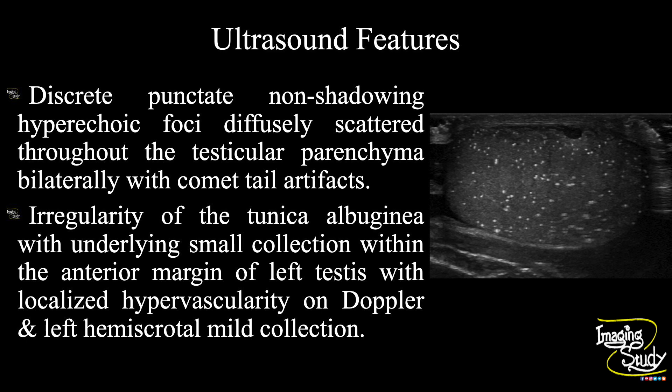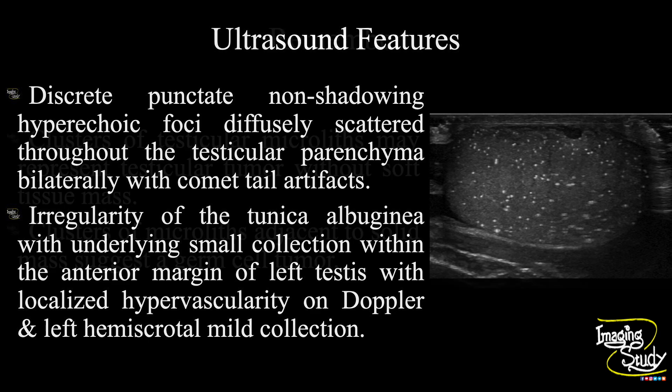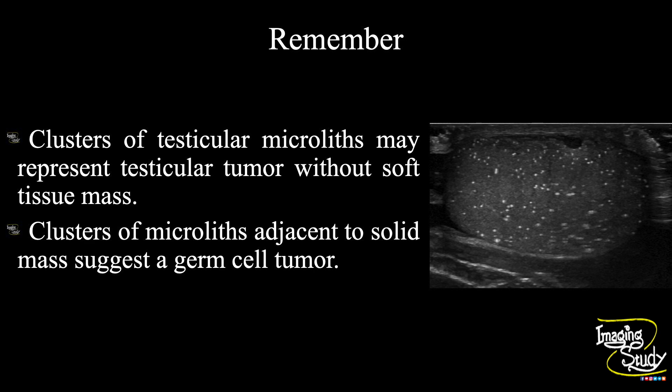So, in summary: discrete punctate non-shadowing hyperechoic foci diffusely scattered throughout the bilateral testicular parenchyma with comet-tail artifacts, indicating bilateral testicular microlithiasis. There is an irregularity of the tunica albuginea with underlying small collection within the anterior margin of the left testis with localized hypervascularity on Doppler and left hemiscrotal mild collection, indicating left testicular hematoma. As a take-home message, clusters of testicular microliths may represent testicular tumour without even the presence of a soft tissue mass on ultrasound. Clusters of microliths adjacent to a solid mass will suggest it as a case of germ cell tumour.